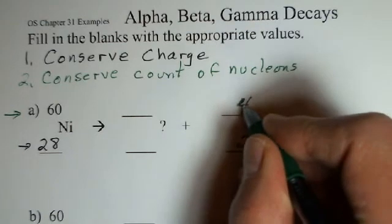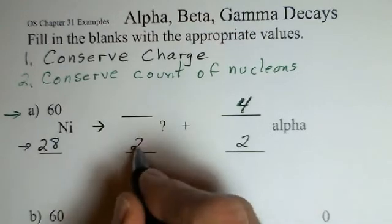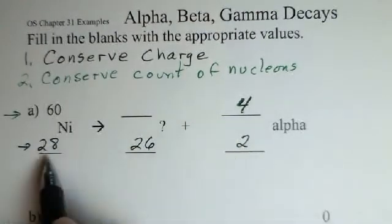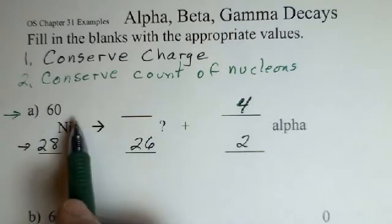So how do we obey these laws? We're conserving charge. I need a 26 here, so 26 plus 2 produces the 28. We're conserving nucleon number. I have a 60, we use up four with the alpha, so we need a 56.